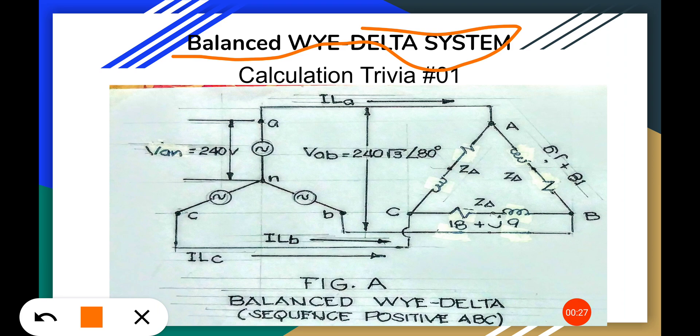It is given the phase voltage Van which is 240V and the line voltage Vab which is 240√3 with phase angle 80 degrees.